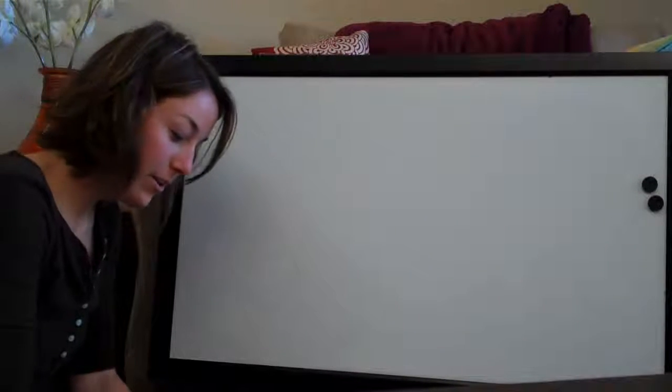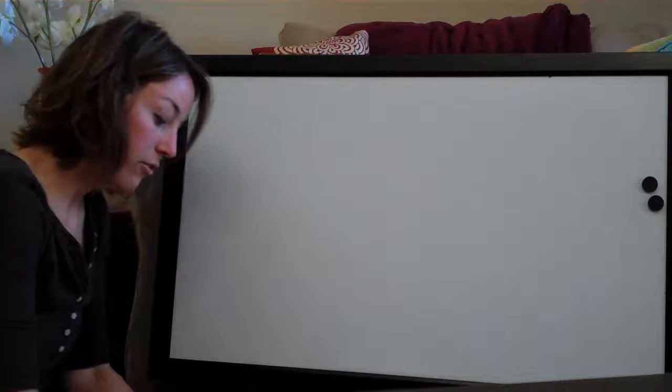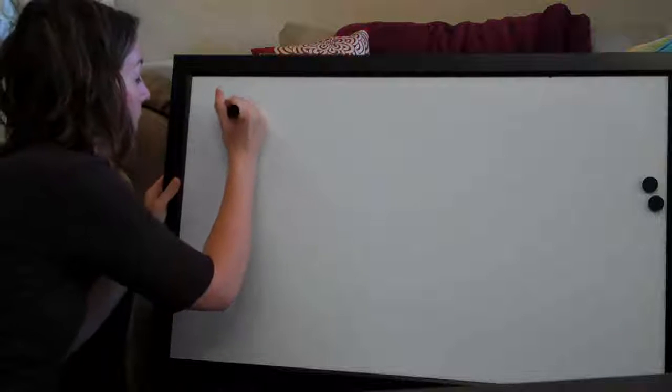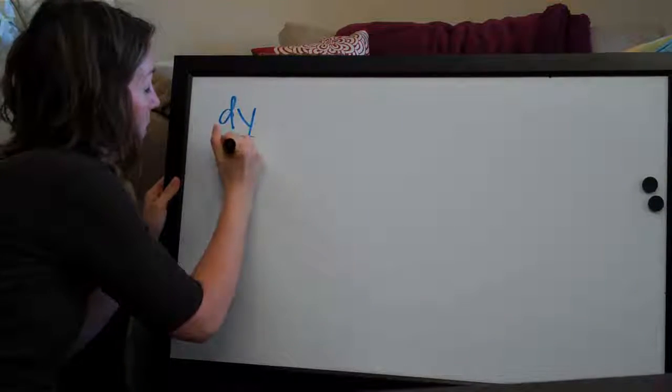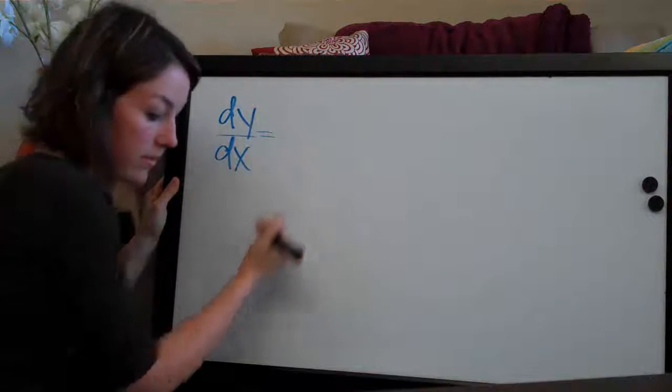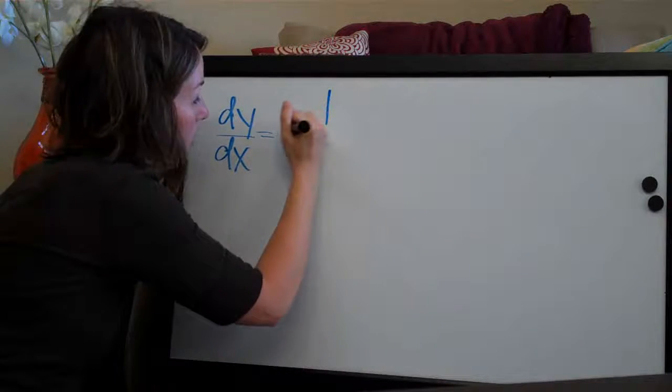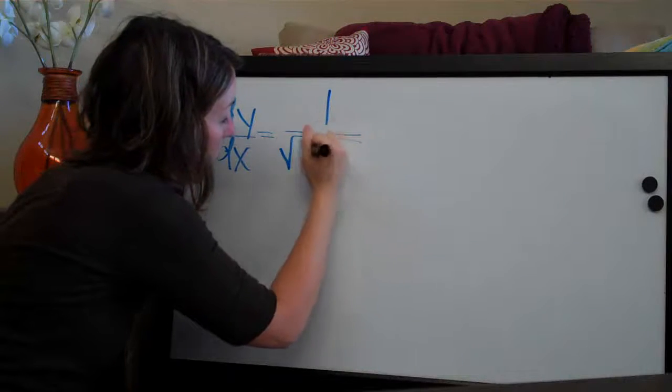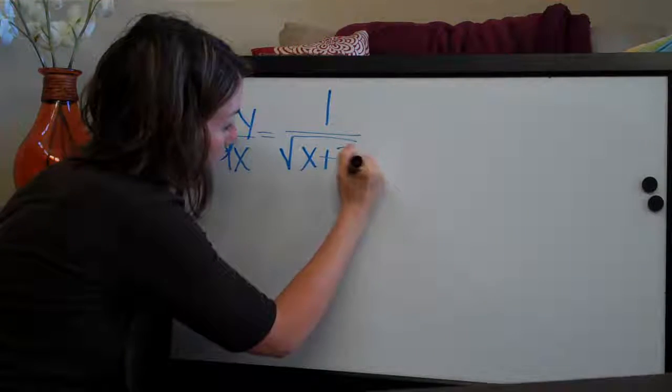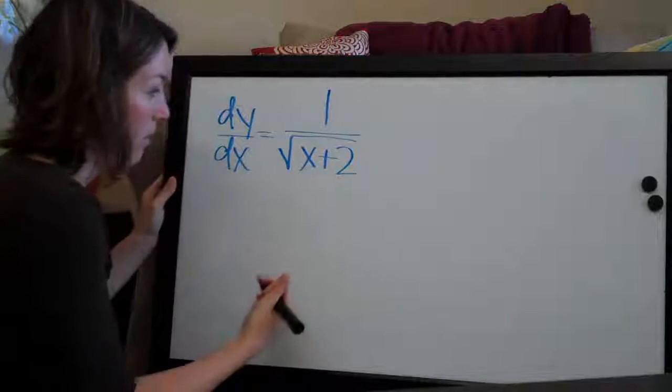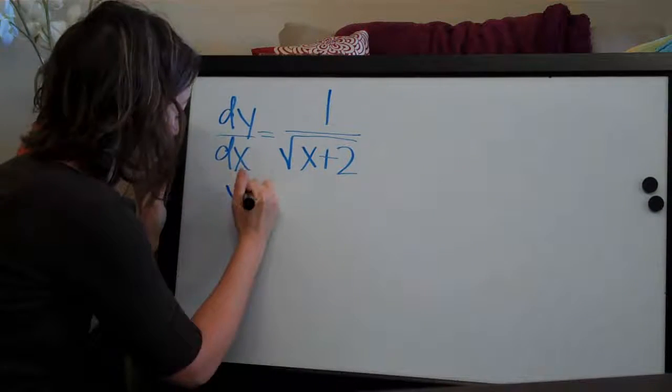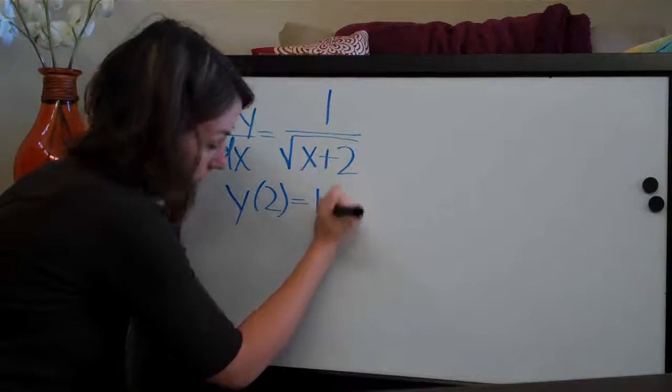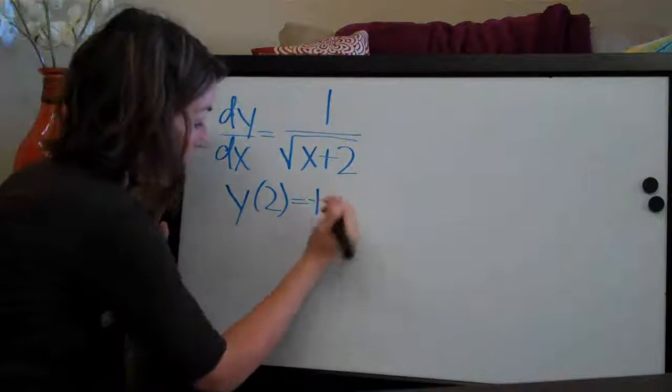Hi everybody! We're going to keep it going with initial value problems. The next one is going to be dy over dx equals 1 over the square root of x plus 2, and then our initial condition is y of 2 equals negative 1.